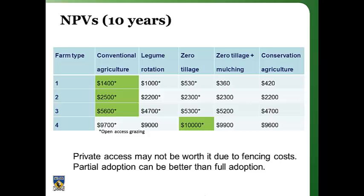These results show that conservation agriculture probably needs to be targeted reasonably carefully and selectively to those types of farms that can benefit substantially from it. It's very likely that some types of farmers would not benefit from its adoption — that's an unfortunate reality we need to grapple with. Conservation agriculture, as currently designed, is clearly not sufficient to be suitable in all cases, at least for this case study.